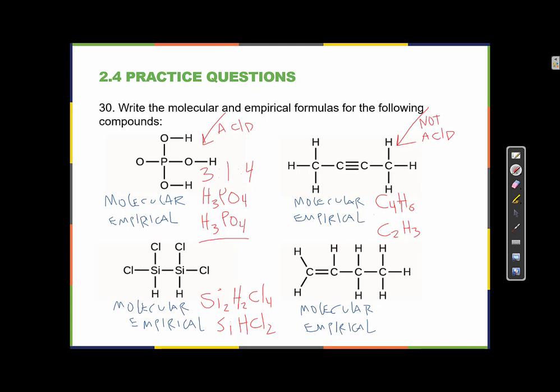For the last example — also not an acid — we have C4 and counting the hydrogens: 1, 2, 3, 4, 5, 6, 7, 8 hydrogens. So the molecular formula is C4H8. The empirical formula would be CH2, because a 4:8 ratio is the same as a 1:2 ratio. Dividing each subscript by 4: 4÷4=1 and 8÷4=2, giving the simplest ratio CH2.